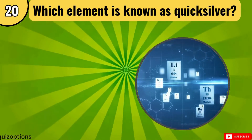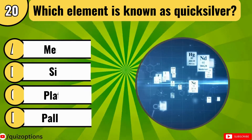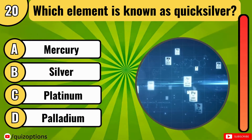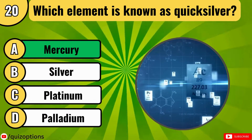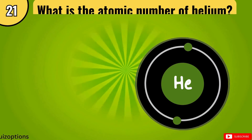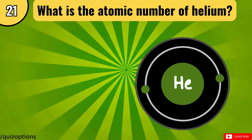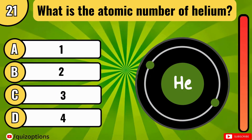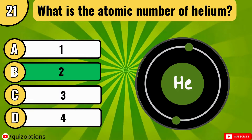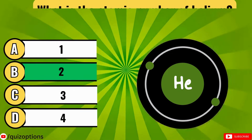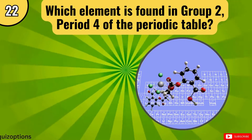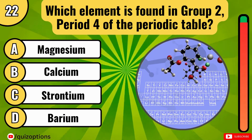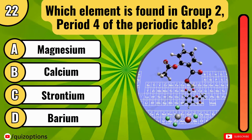Which element is known as quicksilver? What is the atomic number of helium? Which element is found in group 1, period 4 of the periodic table? Calcium.